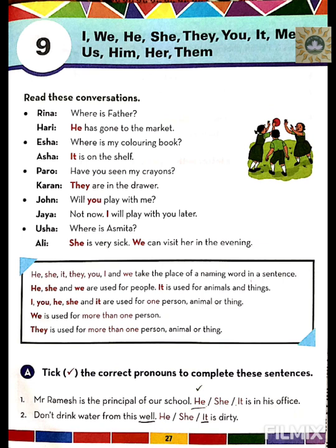'They' is used when there is more than one person, place, animal, or thing being spoken about. 'We' is only used when you are included in the conversation — you are part of the group being talked about. But 'they' is used when you are not a part of the group whom we are talking about.